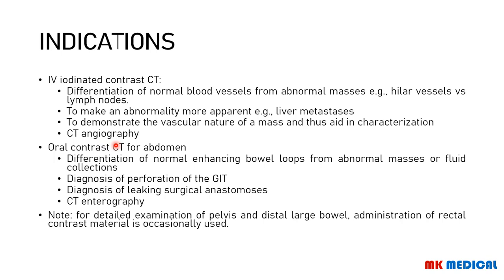Oral contrast is swallowed by the patient and is very important especially for CT abdomen. It helps differentiate normal enhancing bowel loops from abnormal masses or fluid collections, and can be used in diagnosis of GIT perforation and surgical anastomosis leaks — though in many settings a plain erect chest X-ray showing air under the right hemidiaphragm is more common for perforation. For detailed examination of the pelvis and distal large bowel, contrast can also be administered rectally rather than orally.